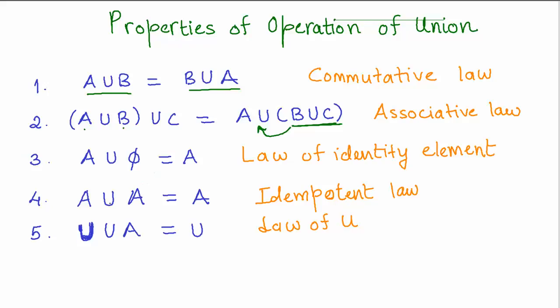Then you have U union A equals U, where U is the universal set consisting of all elements and A is a subset of U. So when you combine a universal set with a subset it always gives you the universal set — this is also known as the law of U. These were the properties of the operation of union of sets, which are pretty important to know and will be helpful when dealing with problems later on.